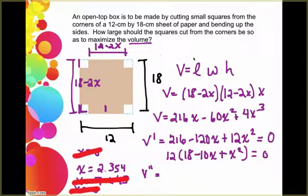If I take the second derivative, then I'm going to get negative 120 plus 24x. But then if I substitute in my 2.354, then that's going to end up giving me a negative value. And by the second derivative test for maxes or mins, I know that my critical point now is my maximum.